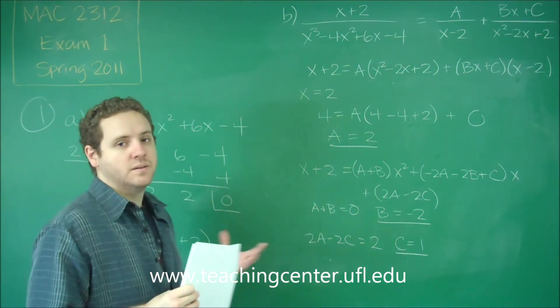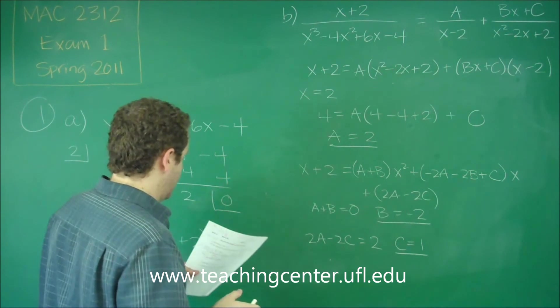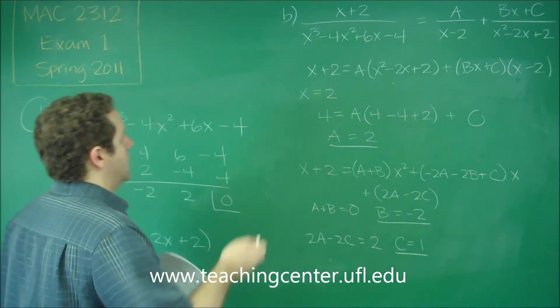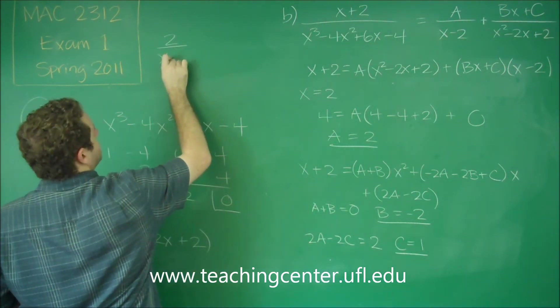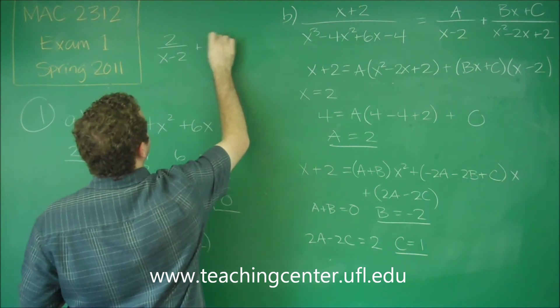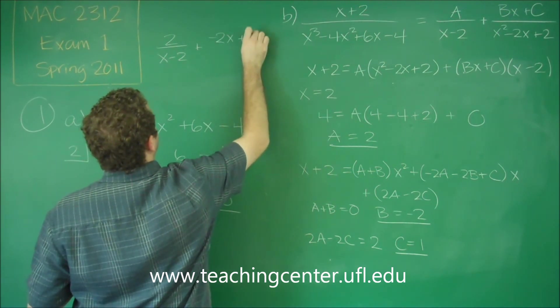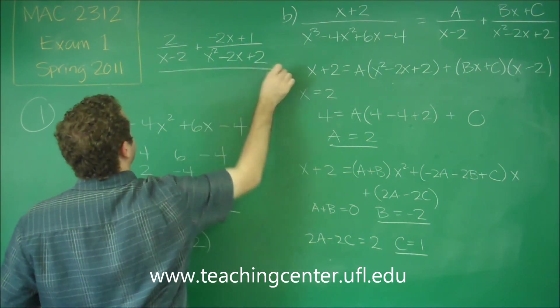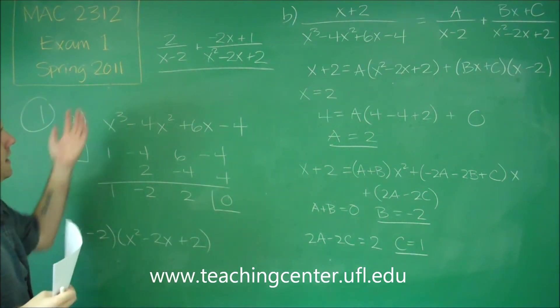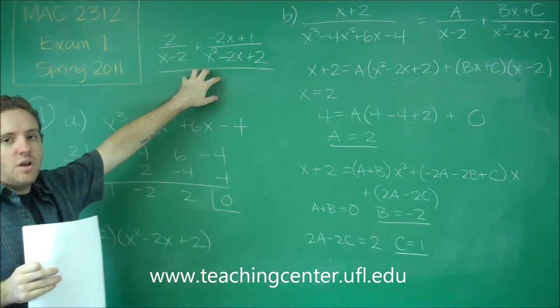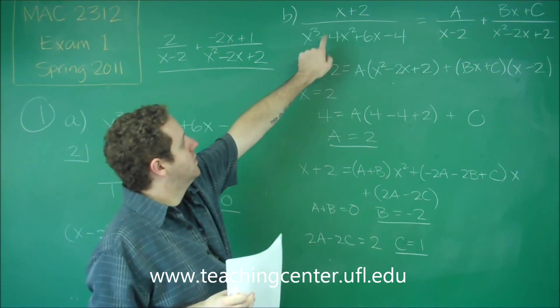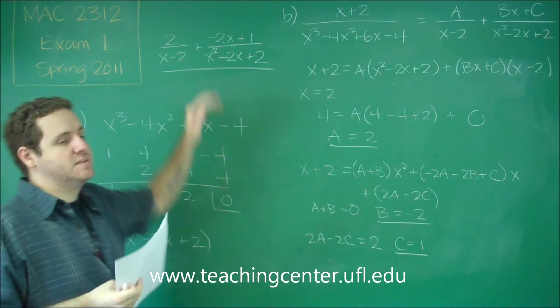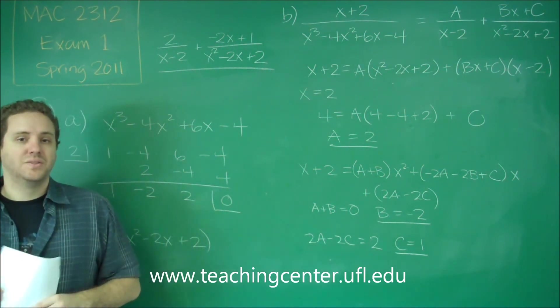So we got all three of our coefficients. So the final thing would just be to write the actual partial fraction decomposition. Or actually in this case, it just says what are A, B, and C. But if you wanted to write it, just make sure it would be 2 over x minus 2 plus negative 2x plus 1 over x squared minus 2x plus 2, plugging in for A, B, and C. So this sum of two fractions is the exact same thing as our original fraction. However, the purpose of this is that this is easier to integrate. And that's what we'll get to in the rest of this problem.